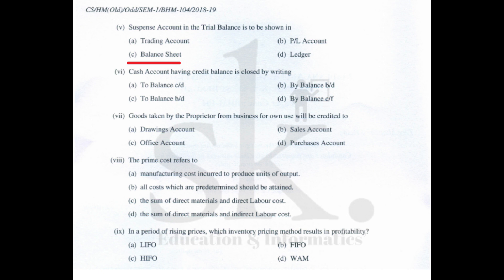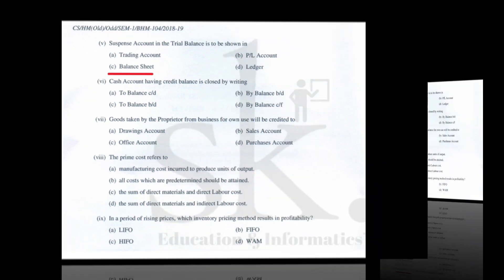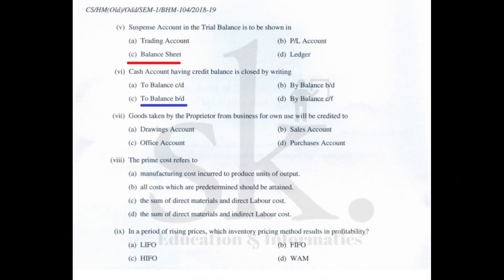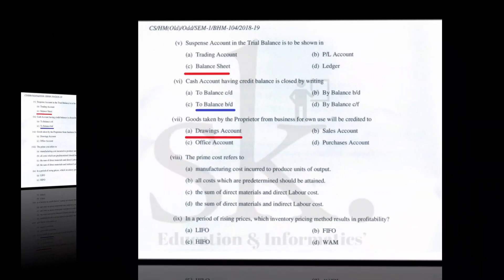Question number six: a cash account having a credit balance is closed by writing — if the debit side is more you get a balance on the credit side, and we write 'by balance c/d' which is then brought down to a new date in the next month as 'to balance b/d'. The correct option is C.